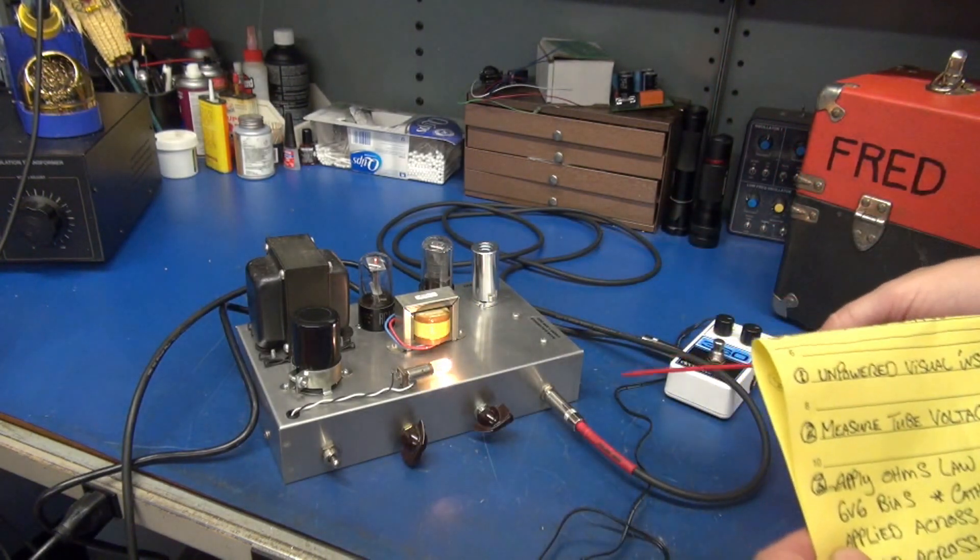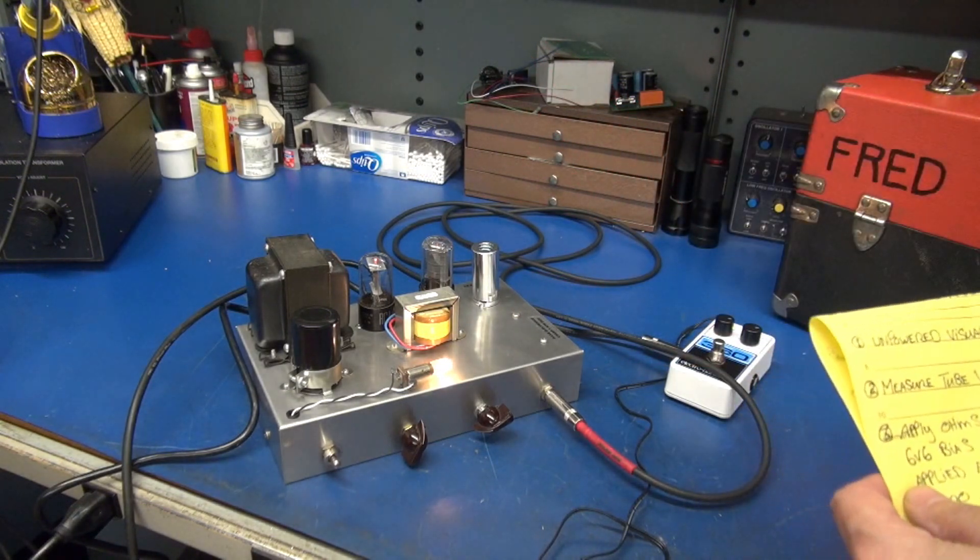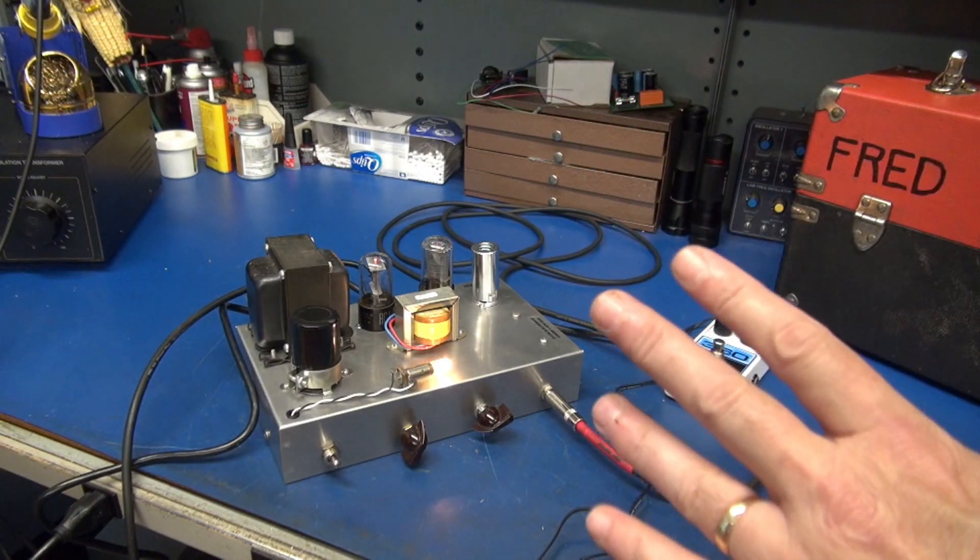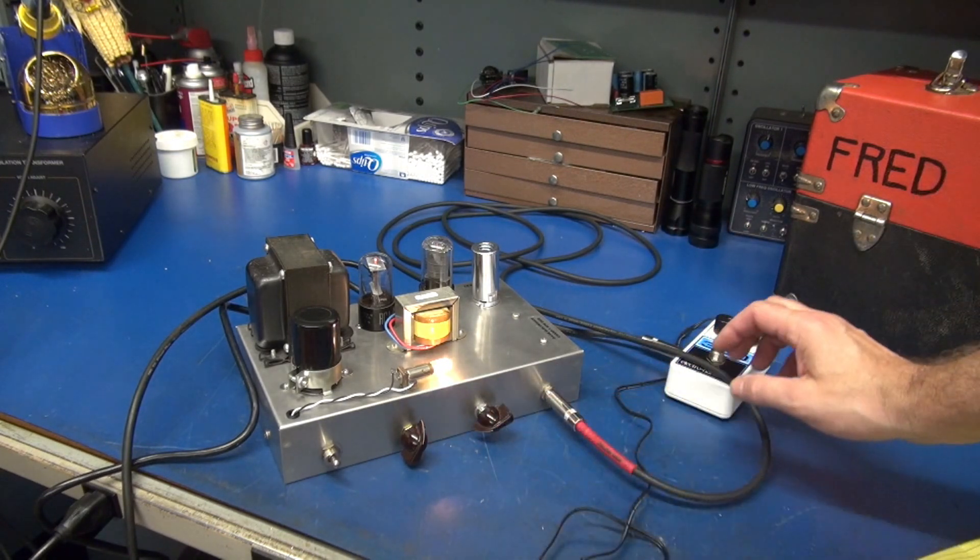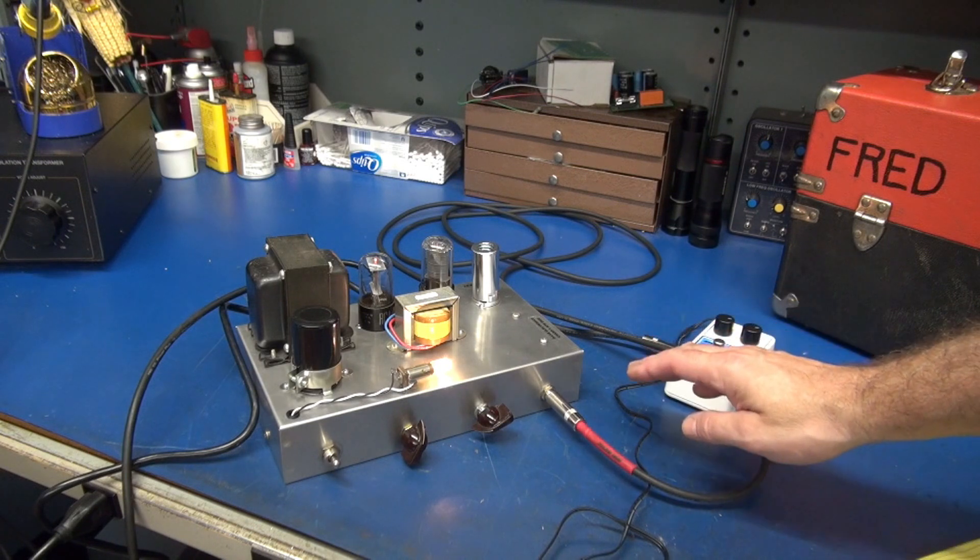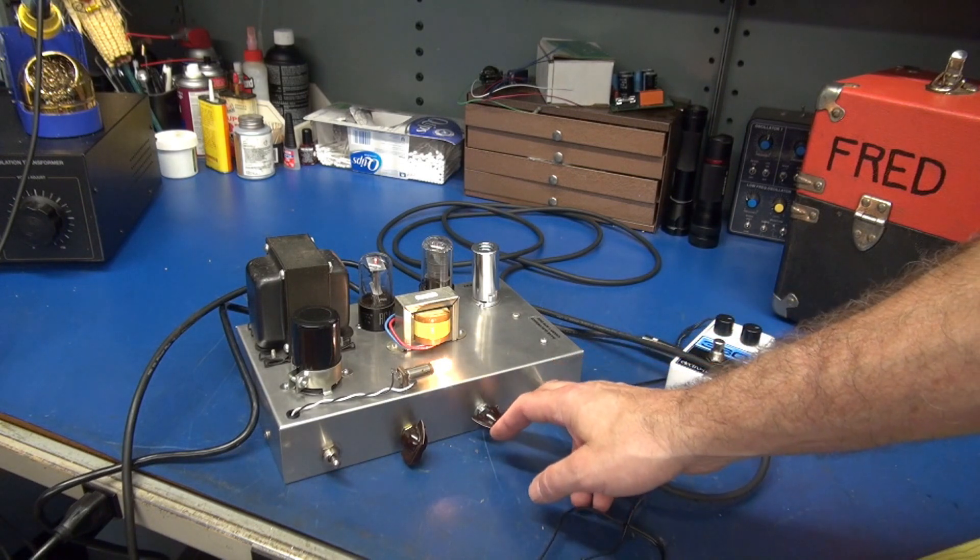We have completed our unpowered visual inspection and didn't see anything that looked out of place or maybe would cause a hazard to apply power. So I have powered up the amplifier and now we are going to listen to the actual problem. This is tone, this is volume. I'm using this little nano looper as an input so we can listen to the amp. Here we go.